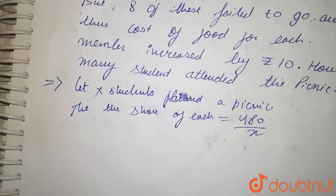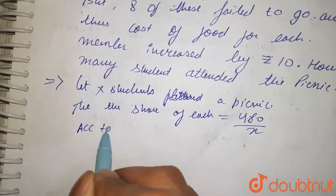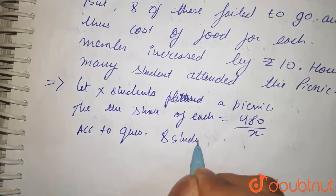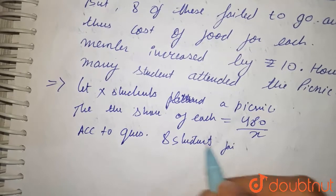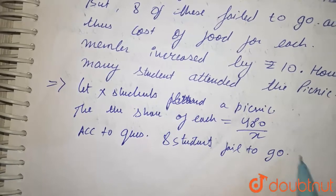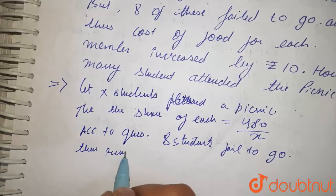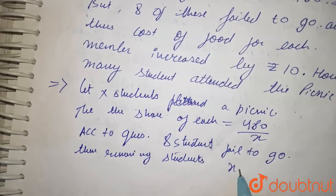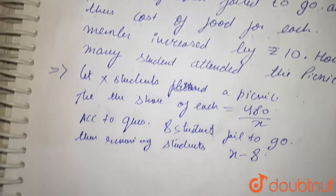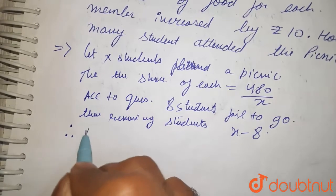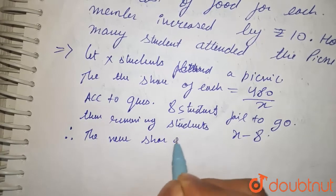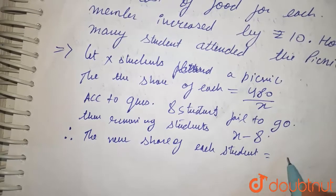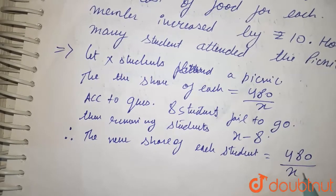According to the question, 8 students fail to go. Then the remaining students are X minus 8. Therefore, the new share of each student equals 480 upon X minus 8.